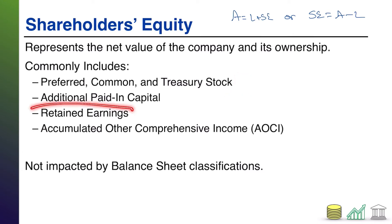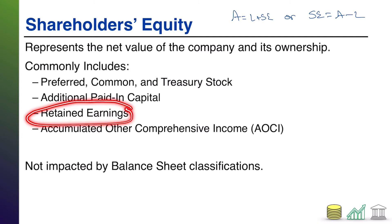Inside your shareholders equity section, you're also going to have retained earnings. All of the earnings of the company belong to the company's owners. Retained earnings is just the accumulation of all those earnings over time. Every year you have an income statement with net income, which is the earnings of the company. Assuming the company does not give it back to the shareholders and holds onto it to reinvest, this is where they display it as part of retained earnings — saying these earnings belong to you, the shareholder, but we're holding onto them to reinvest in the company.